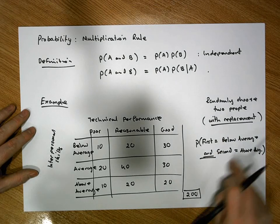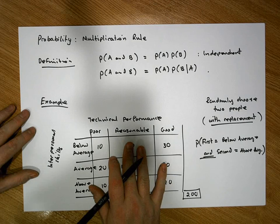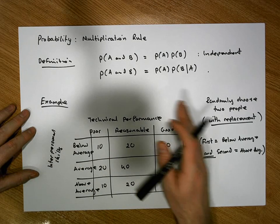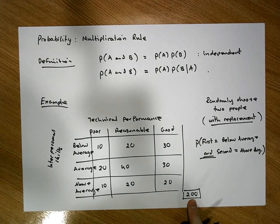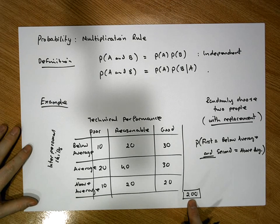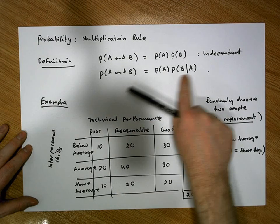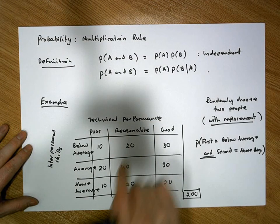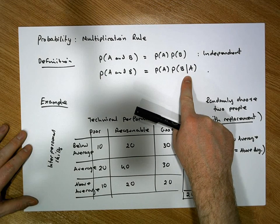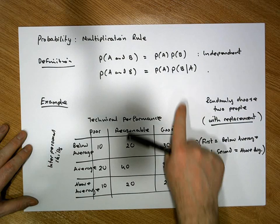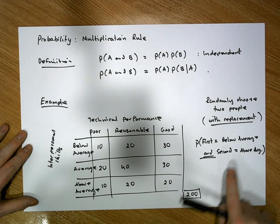If it were without replacement — after selecting the first individual from 200, we don't put them back — the sample space changes because there are only 199 individuals left to choose from. In that case, we'd be in the non-independent version of the rule, requiring us to account for the conditional probability: the probability the second person is above average, knowing the first person selected was below average.